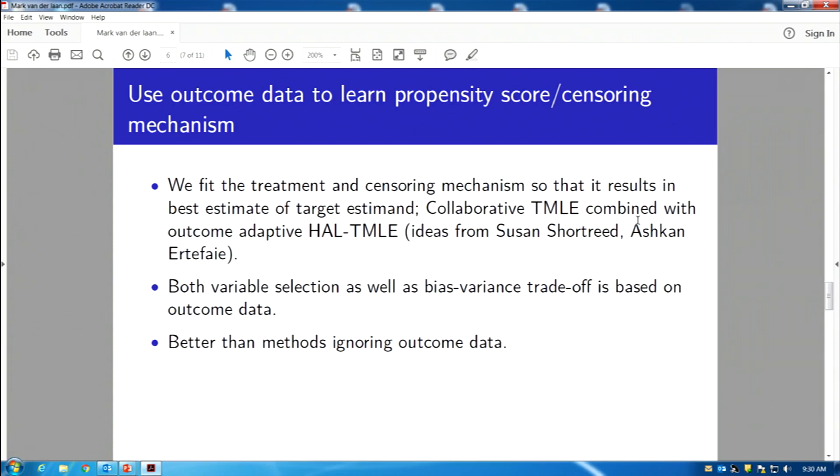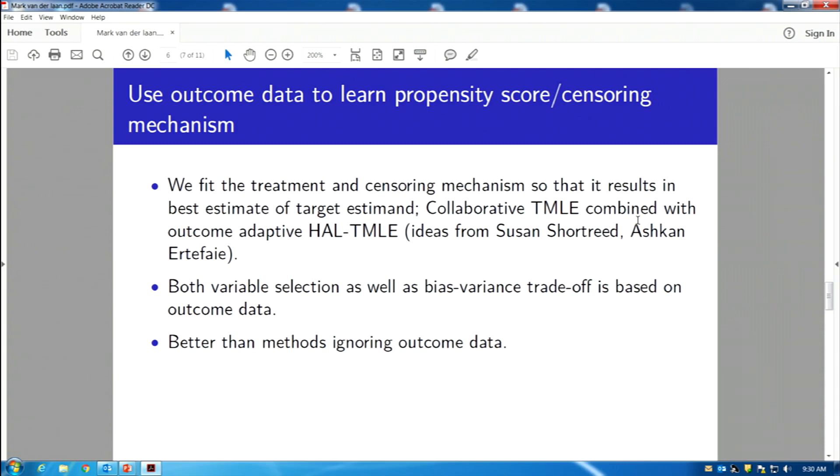Another thing, which we also in the guide, and which has been addressed, mentioned by others, people say, don't use outcome data when you estimate a propensity score. We do the opposite. We use outcome data when we learn things like a propensity score. These are methods we also developed. We call it collaborative targeted maximum likelihood estimation. More recently, outcome adaptive estimation based on ideas of Susan Shortreed and Ashkan. And so what this does is both the variable selection as well as, you know, how many variables do you, so the tuning, the bias variance trade-off, both of them are based on the outcome, but they are done in an a priori specified way.